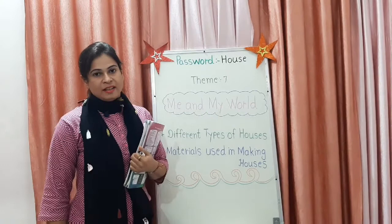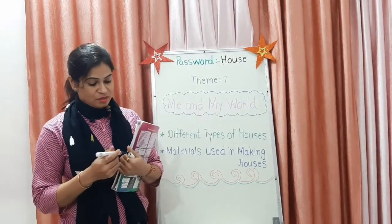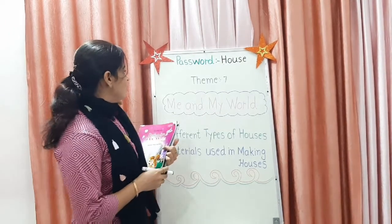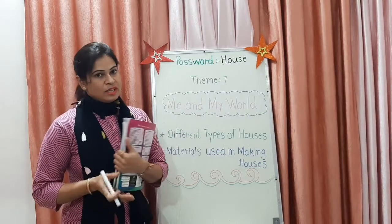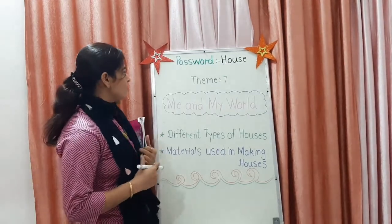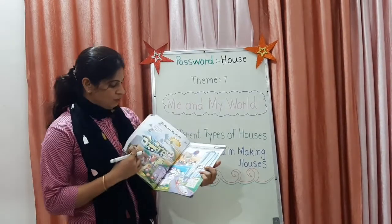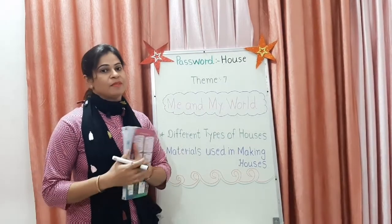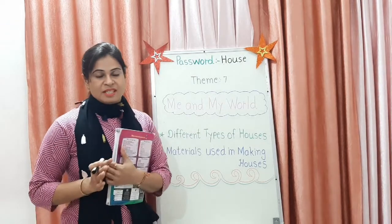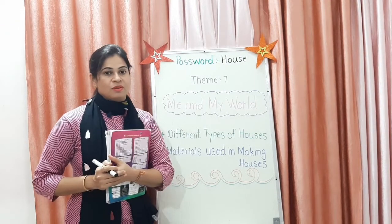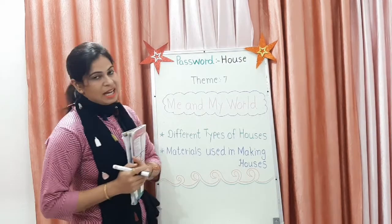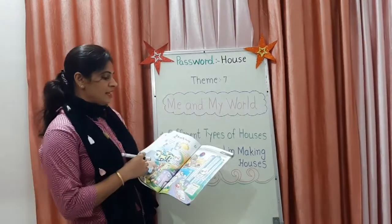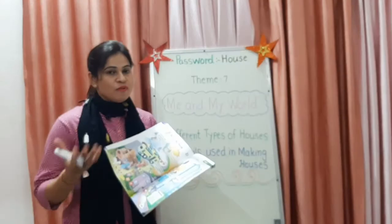What is the password of today? House. What does house mean? Ghur. Yes, ghur. So students, in today's EBS class, we are going to start our new theme. Theme number 7: Me and My World in your EBS magic book. We have six themes complete and you all have understood them properly through worksheets, activities, and question answers. So today we are starting theme number 7.